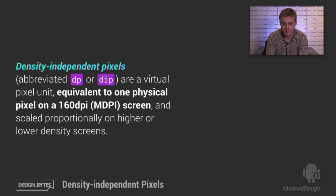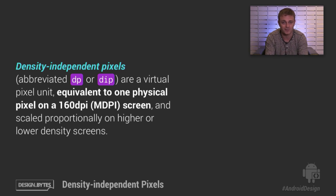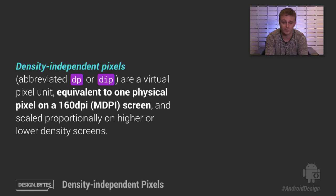So why do we use density-independent pixels? The reason is that we want to make sure that when we create layouts and define the user interface for our application, UI elements remain the same physical size approximately across devices with different densities. We don't want to have to specify for each individual density what the sizes of our UI elements should be.